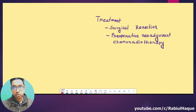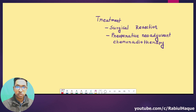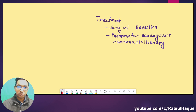Regarding treatment: surgical resection is the primary treatment option, and preoperative neoadjuvant chemoradiotherapy is also used. This concludes part 1 of the esophageal tumor lecture. In part 2 we will continue and talk about squamous cell carcinoma of the esophagus. I hope this video was helpful. If you like my videos, do comment and share. For my students, I also recommend going through your textbooks to know more. Until next time, take care and stay blessed. Thank you.